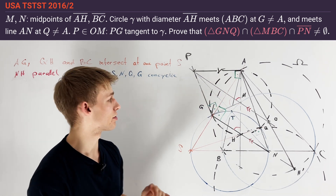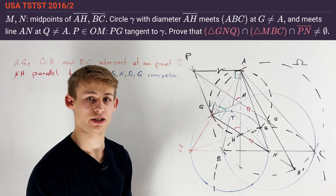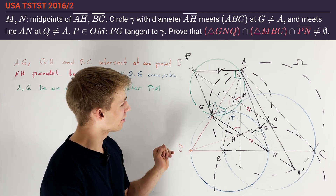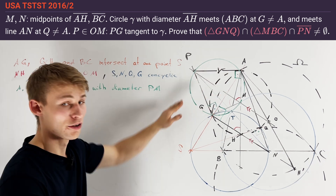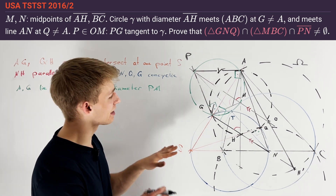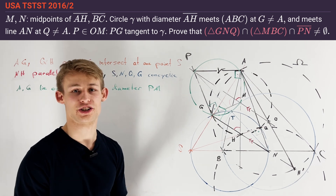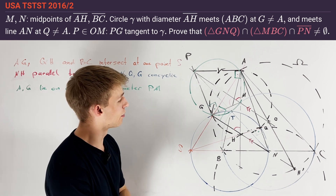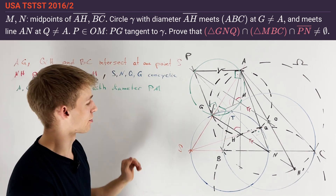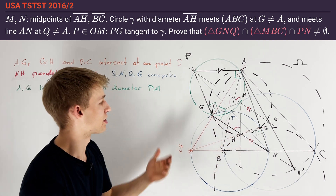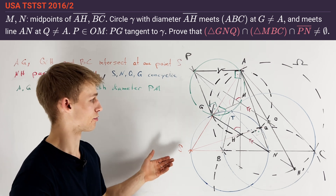This motivates us to draw in the circle with diameter PM, because we know that points G and A lie on it. Looking at the picture, we can guess that point T — the point of interest — also lies on this green circle. From here, we basically have all the information needed. We define T as the intersection of this green circle with the circumcircle SNQG, not equal to G. This gives us the most information and will enable us to finish the proof.